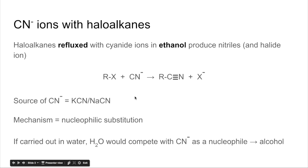Your source of cyanide ions can be potassium cyanide or sodium cyanide. The mechanism is nucleophilic substitution. And the reason it has to be carried out in ethanol is because if you use water as your solvent, that can also act as a nucleophile and compete with that cyanide ion, and that would actually give you an alcohol. So obviously we don't want that in this case.